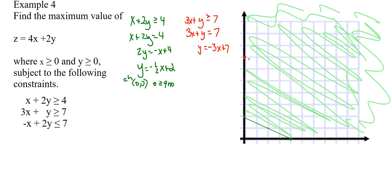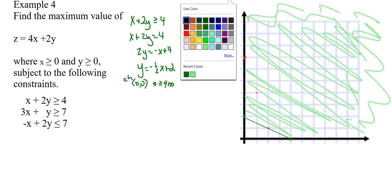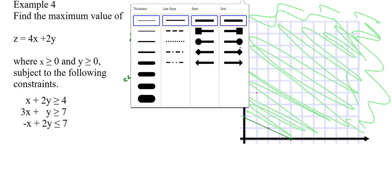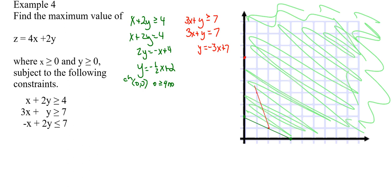And negative 3, down 3 over 1, down 3 over 1, I get a couple points there. That is where our graph is going to be.